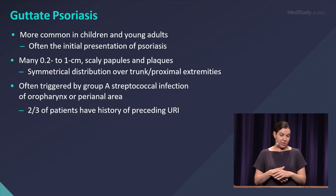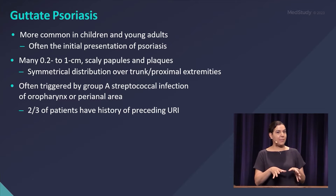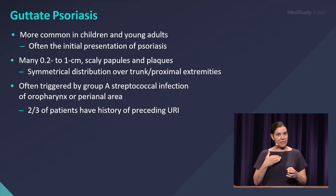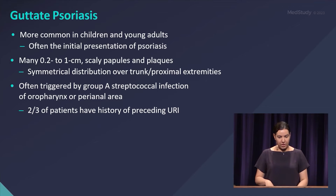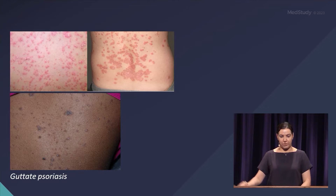About two-thirds of patients might have a preceding strep A infection, so you always want to ask about that — both pharyngeal infection and perianal infection. You also want to ask about preceding URIs, as that can be another common trigger.